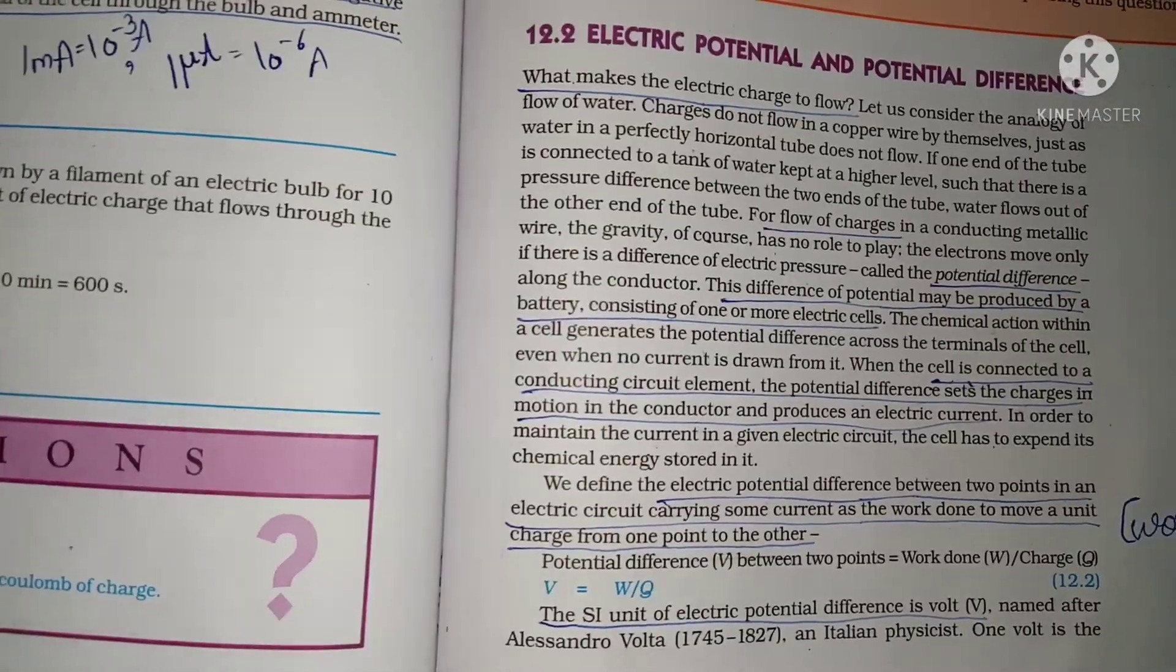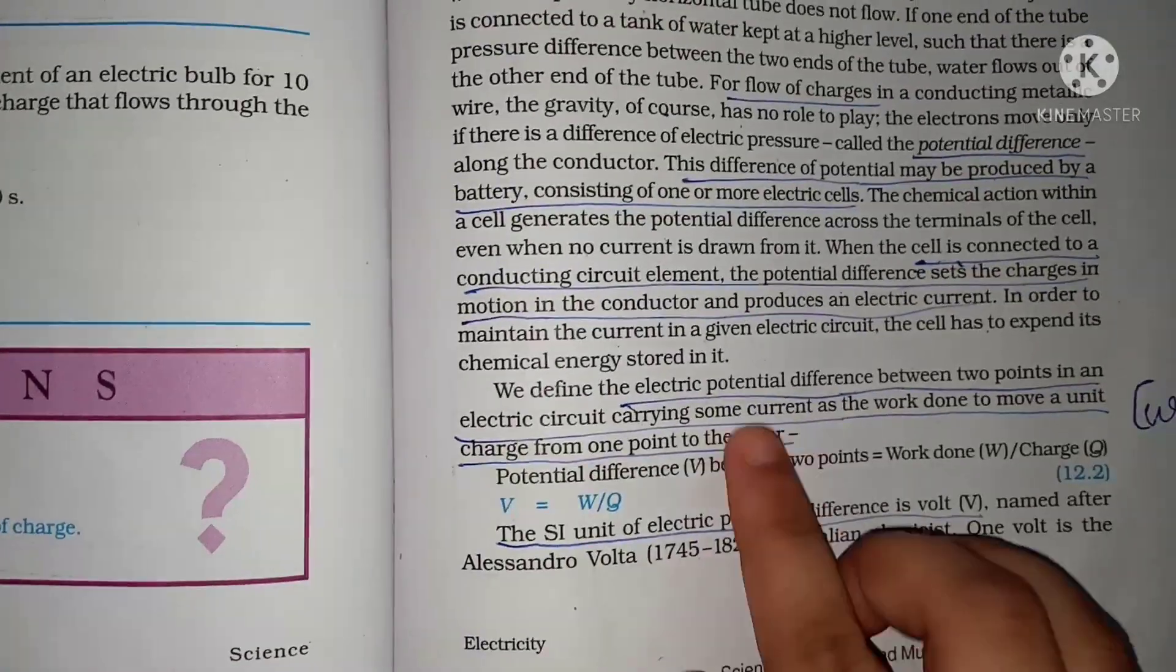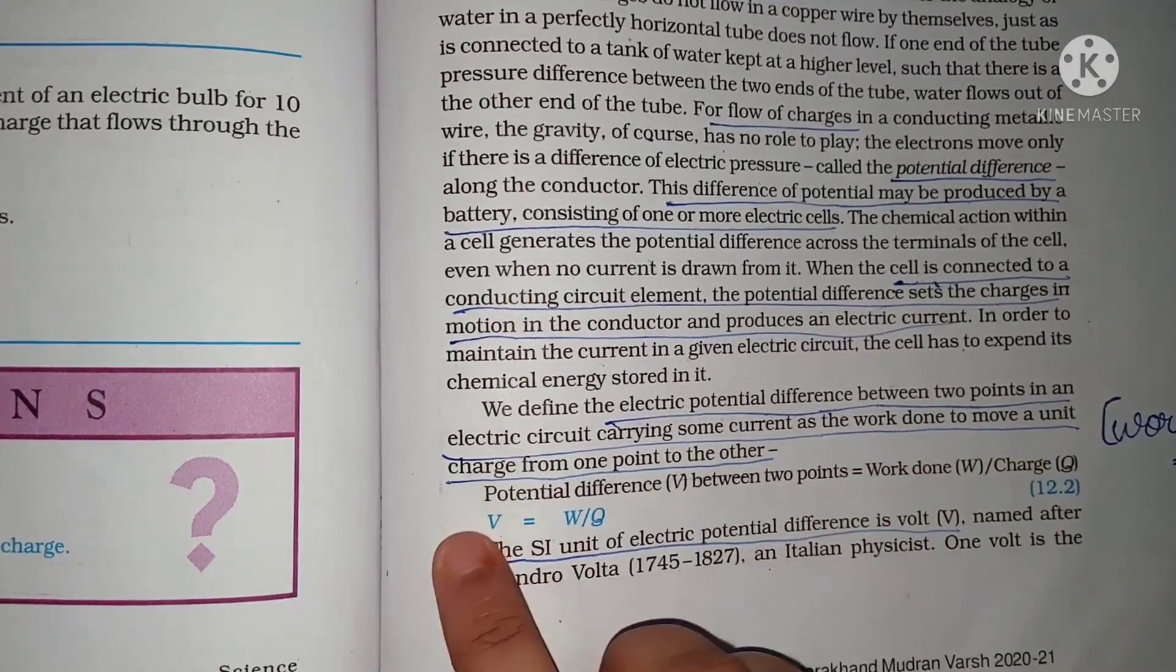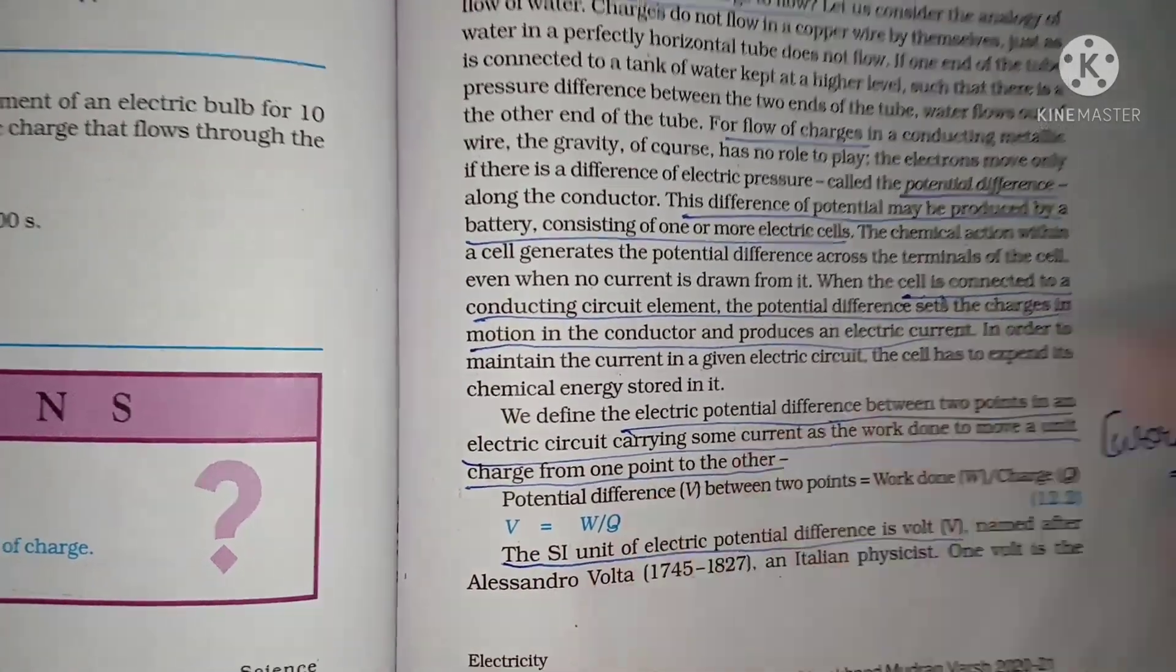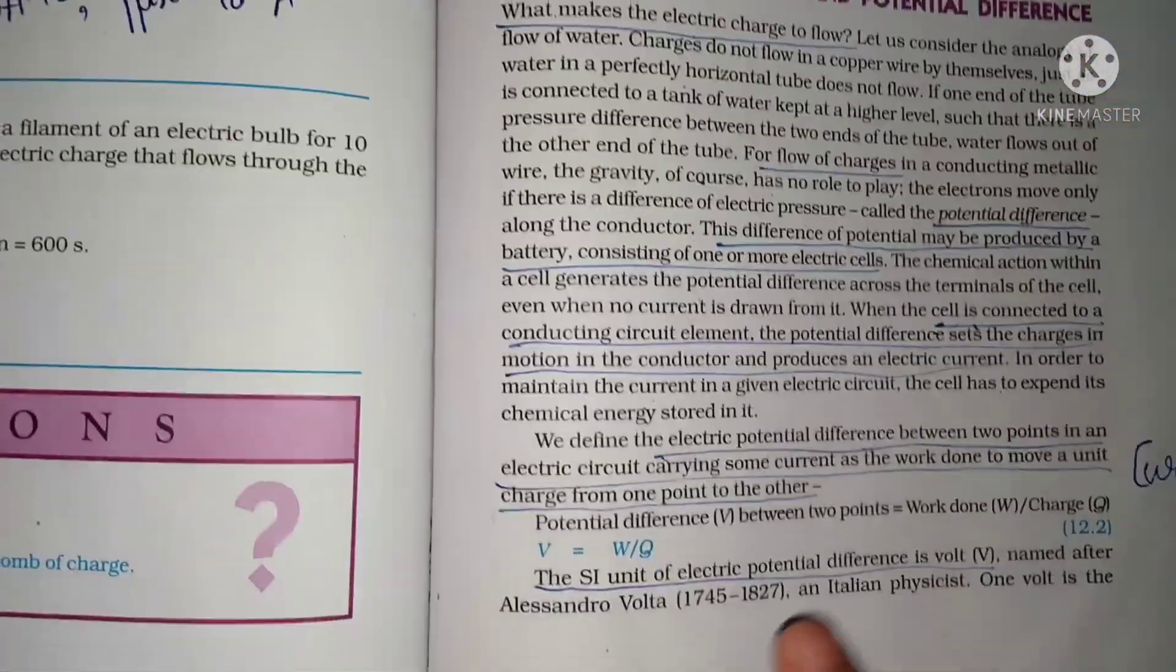So, next topic hai, electric potential and potential difference. So, electric potential difference between two points in an electric circuit carrying some current is the work done to move a unit charge from one point to the other. So, this was the definition of electric potential or potential difference.